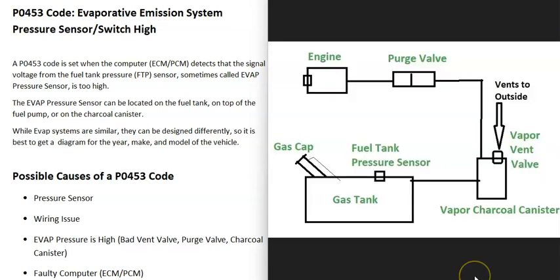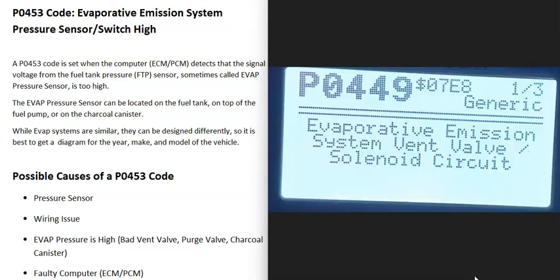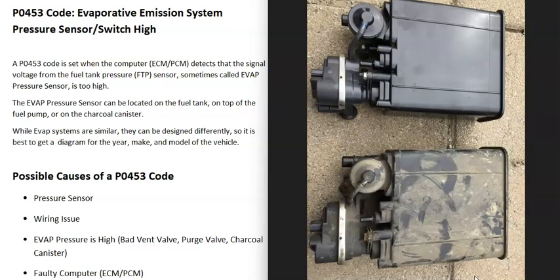The next cause is that fuel pressure is actually high inside the system due to a failed EVAP component — such as a bad vent valve, a bad purge valve, or a charcoal canister issue. Usually when this happens you'll get other codes as well. For example, if you're also getting a P0449 (evaporative emission system vent valve solenoid circuit) code, it would be a good idea to check the vent valve, which is usually combined with the charcoal canister but can be separate.